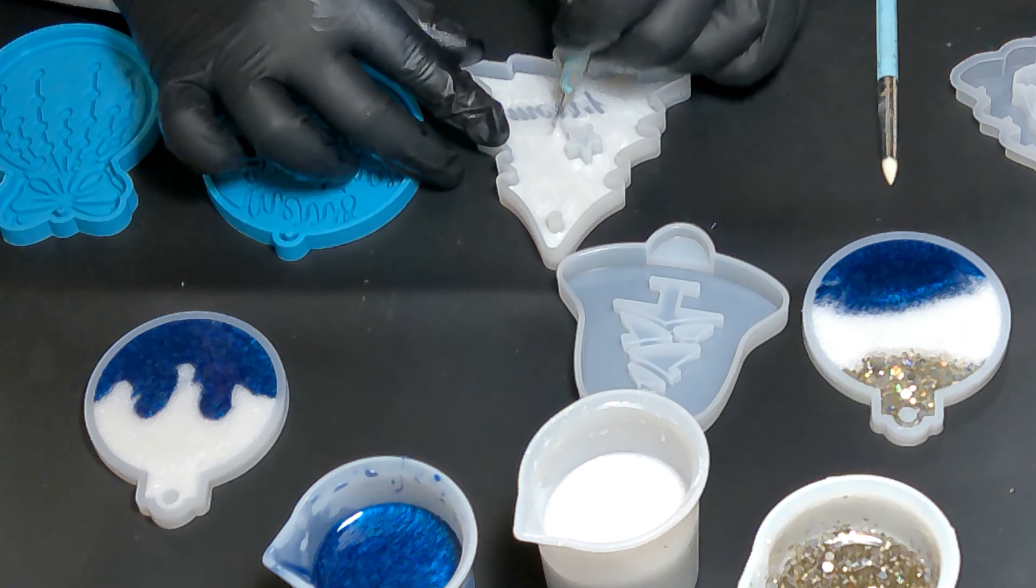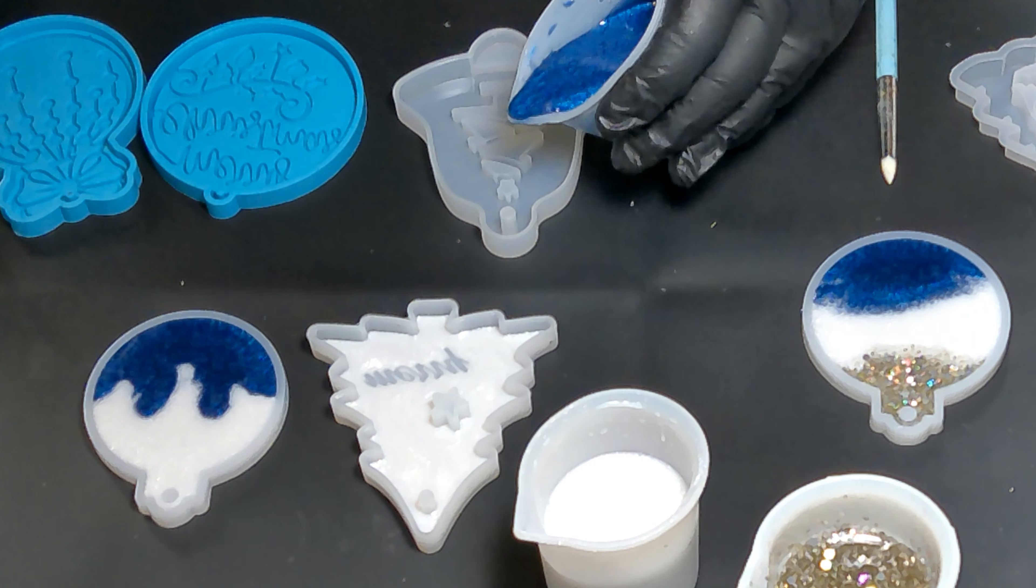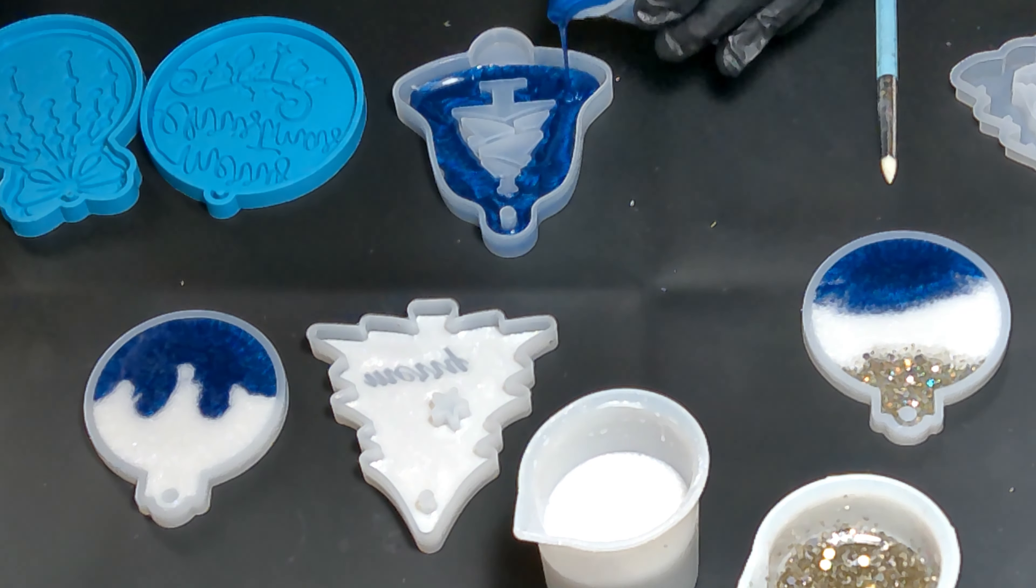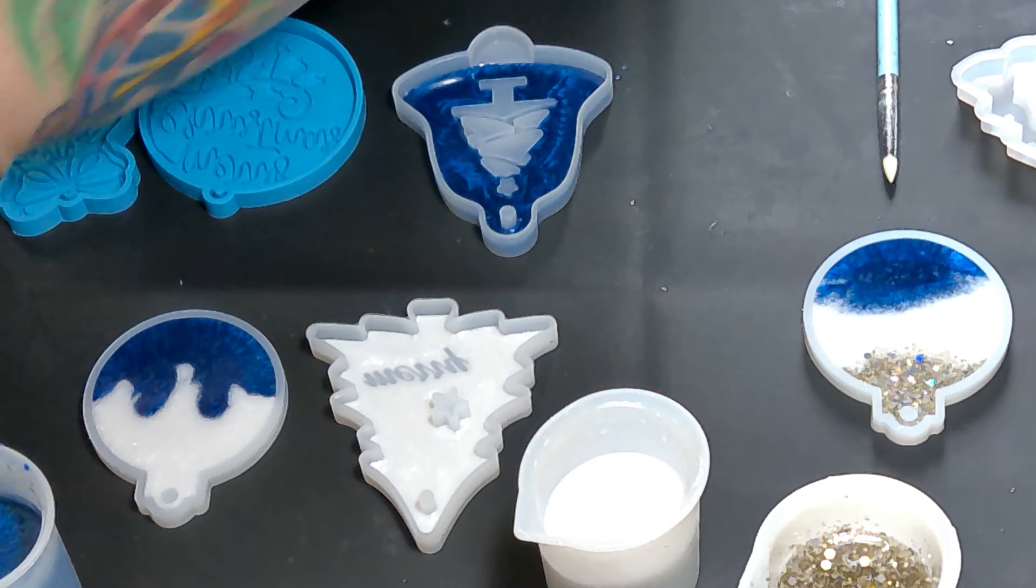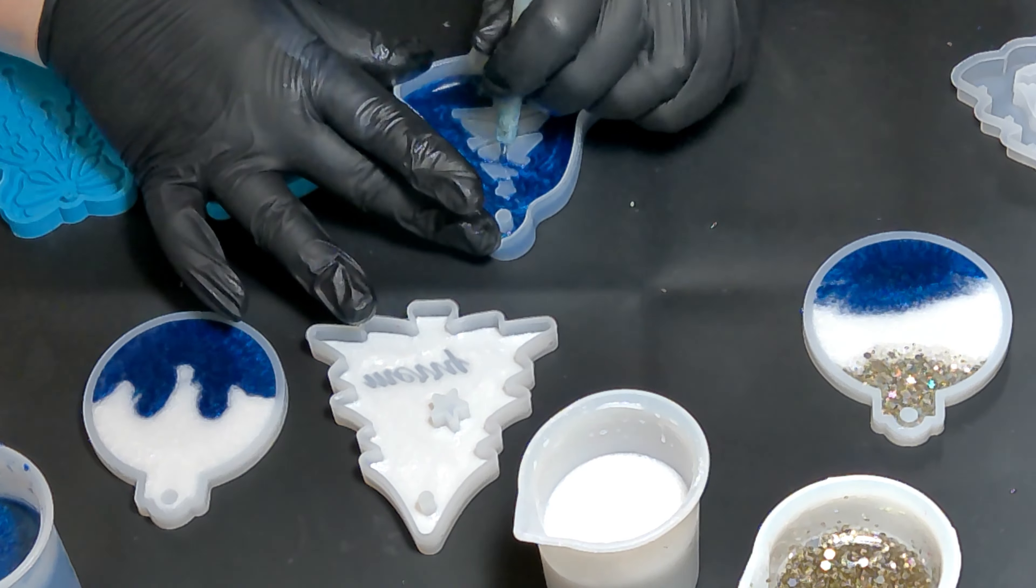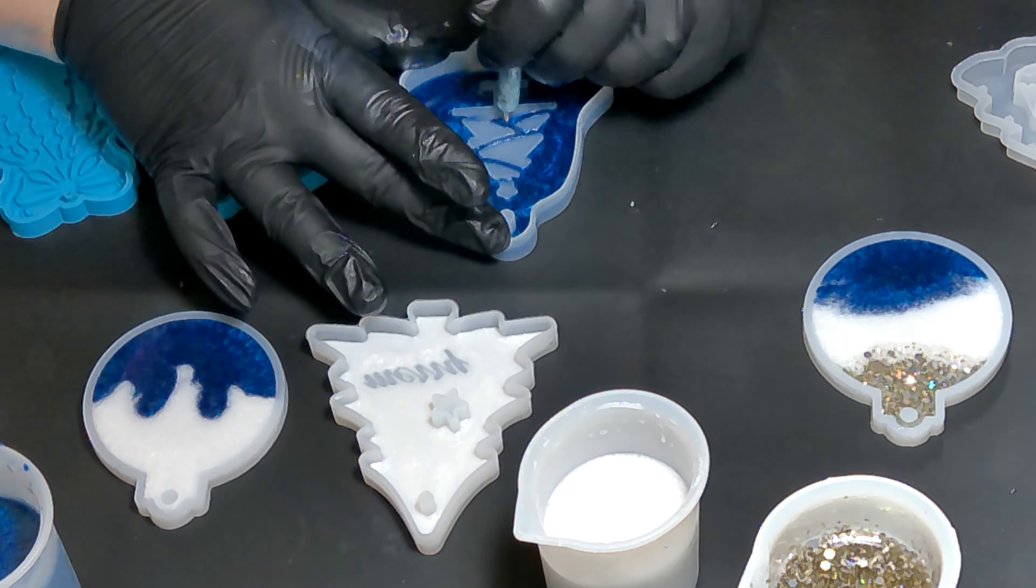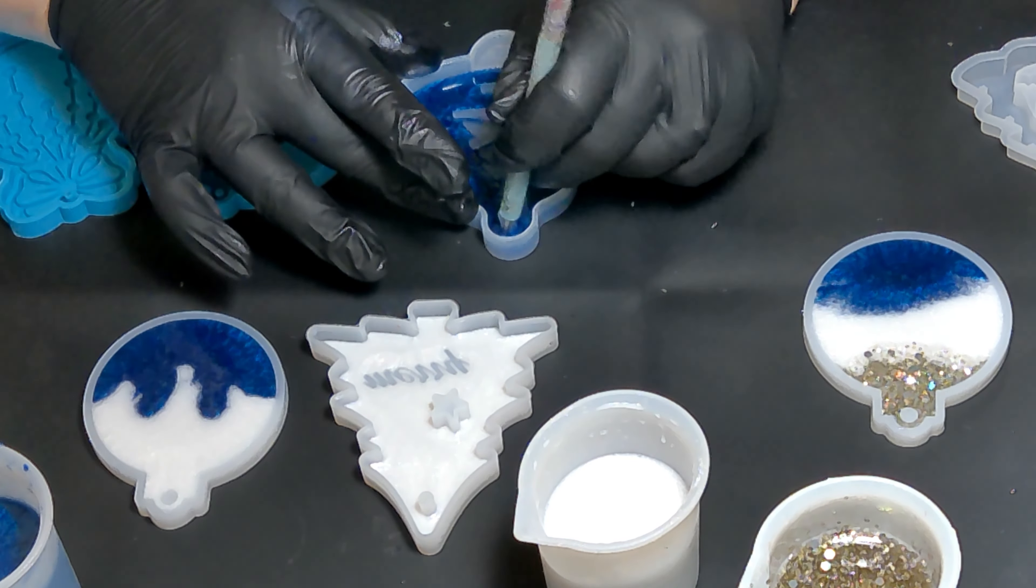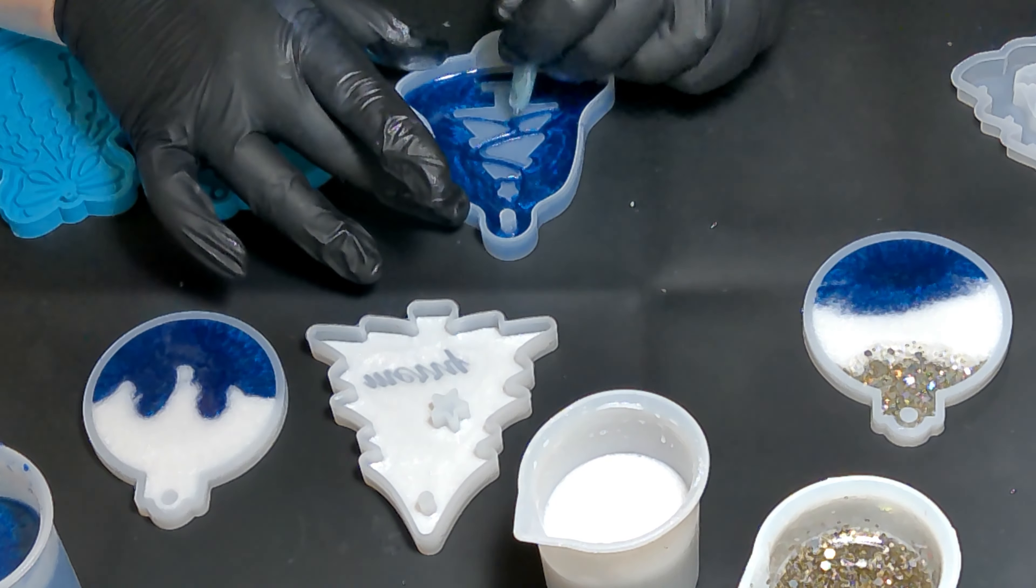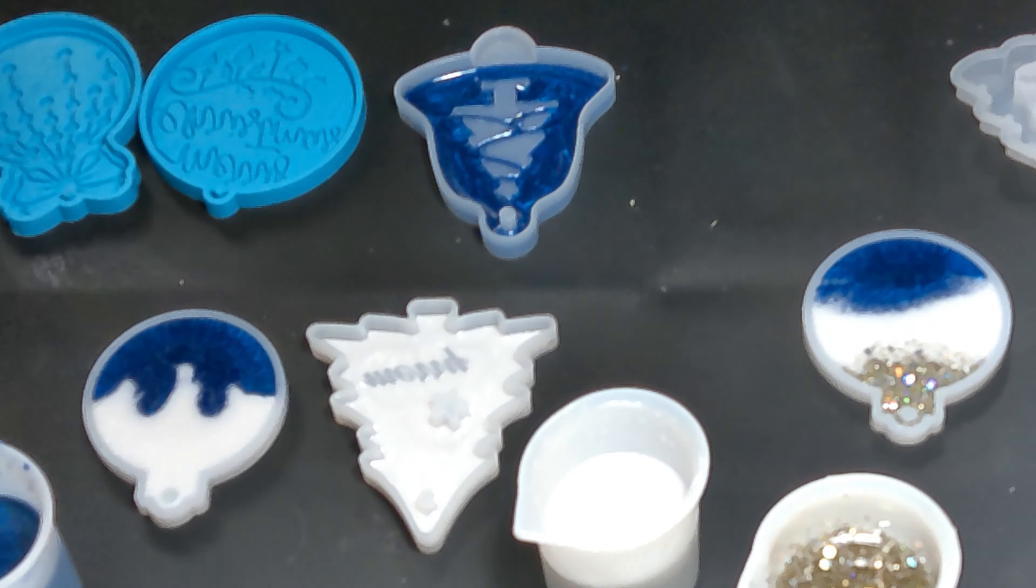Now we're going to do the same thing with the bell. It's the same kind of mold where it's 3D, only this time I want the front to be blue. I'm going to do the same thing with my dotting tool, going around and through the tree to get out the air pockets, dragging the resin through so it covers. I'm going around the little hole for the ribbon because air pockets like to get stuck there.